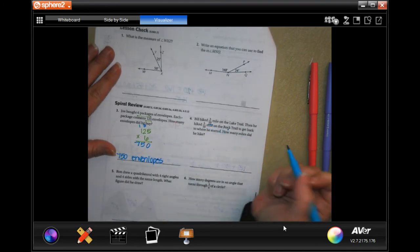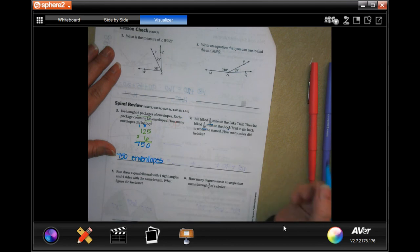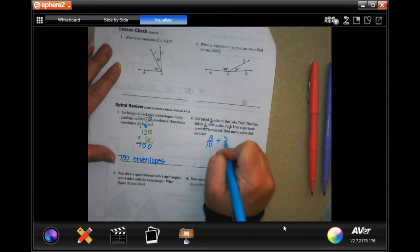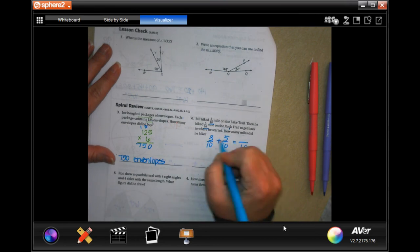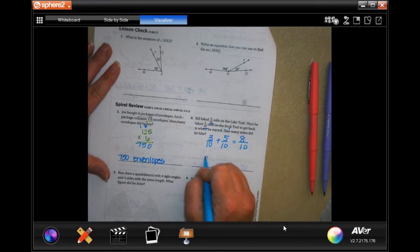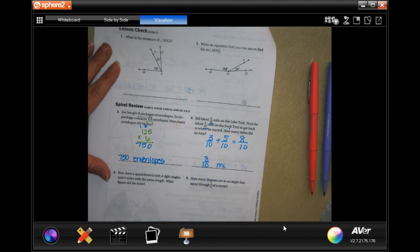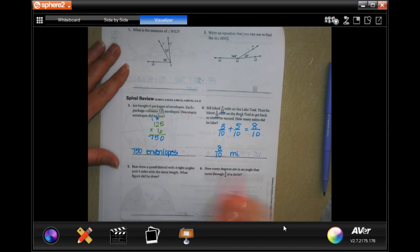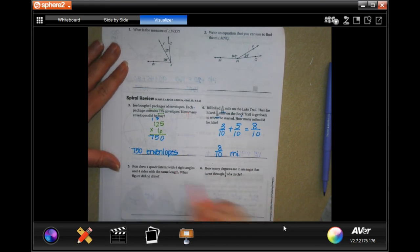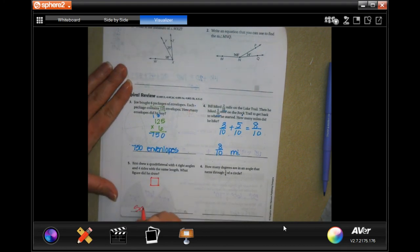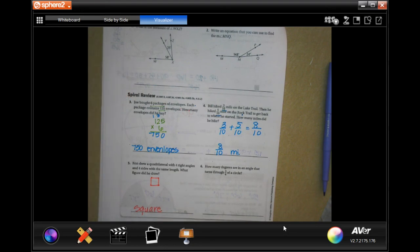Bill hiked three tenths of a mile on the lake trail. Then he hiked five tenths of a mile on rock trail to get back where he started. How many miles did he hike? Well, three tenths plus five tenths. We keep the denominator and three plus five is eight. Eight tenths of a mile. Ron drew a quadrilateral with four right angles and four sides the same length. What shape is that y'all? The square.